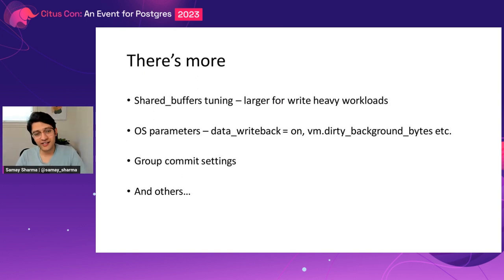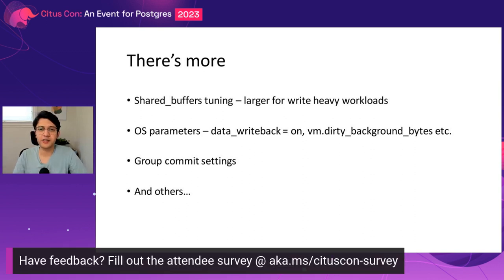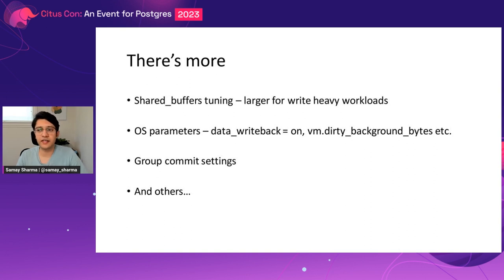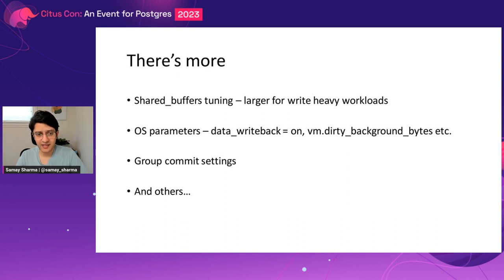There's more you can do that I won't cover in depth today. Tuning shared_buffers impacts pretty much everything — sometimes a larger value helps write-heavy workloads, and in other cases very low shared_buffers avoids double-buffering between the OS and Postgres. You may also need to tune the operating system — as Postgres pushes more IO, the OS needs to keep up. For example, setting data writeback to on or editing vm.dirty_background_bytes. There are also group commit settings and other parameters.